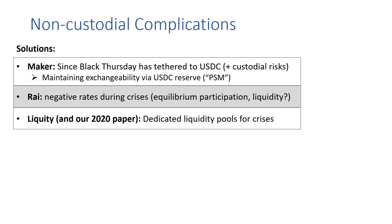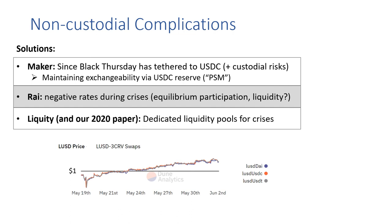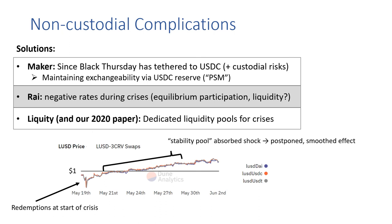Another approach, which we've suggested in a paper before and which Liquidy essentially uses now, is to develop dedicated liquidity pools to help absorb deleveraging as it happens. This has worked fairly well in the Liquidy crisis this past May. Liquidy allows direct redemptions, which we saw at the beginning of the crisis, but then the stability pool absorbed the following deleveraging in a way that effectively postpones and smooths the effect.